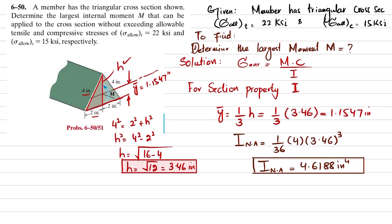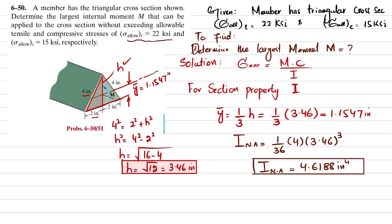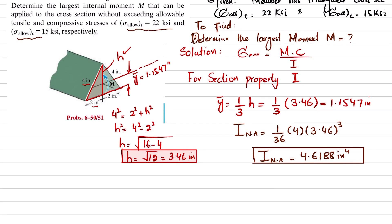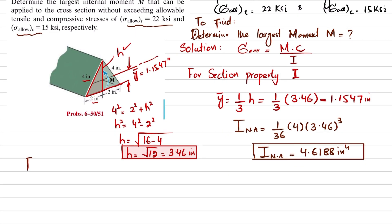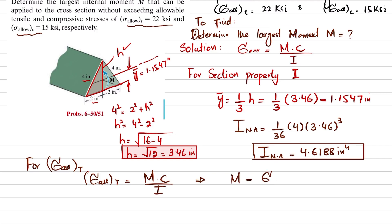We have been given the allowable tensile and compressive stresses, so we will find the moment from both. For allowable bending stress due to tension: σ_allow = M·c / I, so M = σ_allow · I / c. The allowable tensile stress is 22 ksi, I = 4.6188 in⁴, and c is the distance from the neutral axis to the bottom = 1.1547 inches.